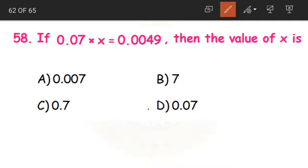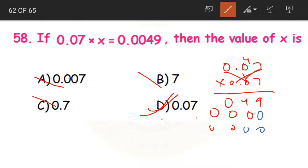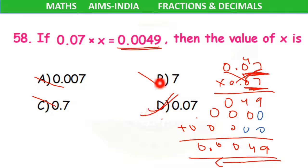We are left with only option D. Without even multiplying we can say option D is the correct answer since A, B, and C are all wrong. Let us verify: multiplying 0.07 by option D. The product has 4 decimal places, giving 0.0049 — the same as given in the question. So option D is confirmed as our correct answer.